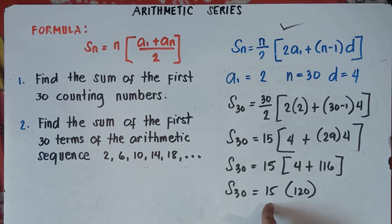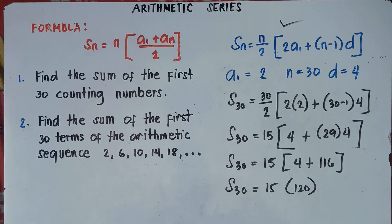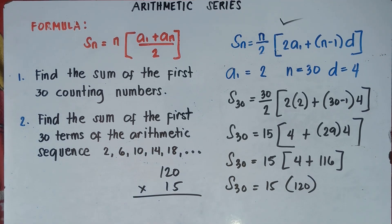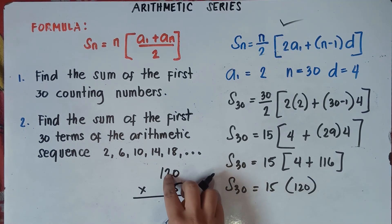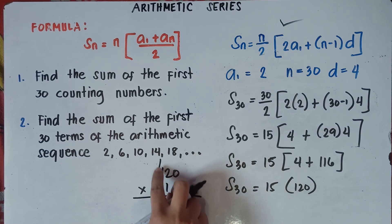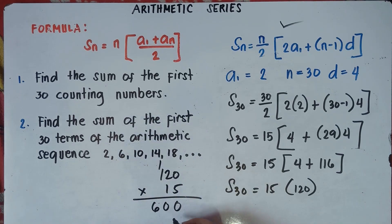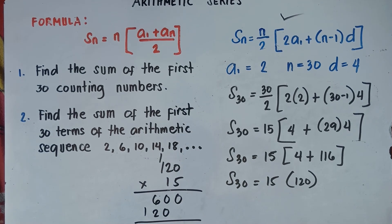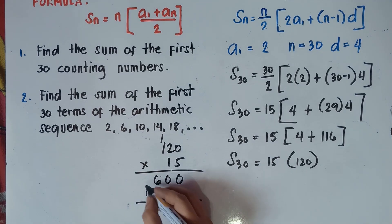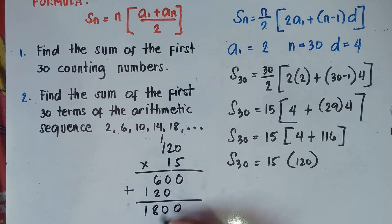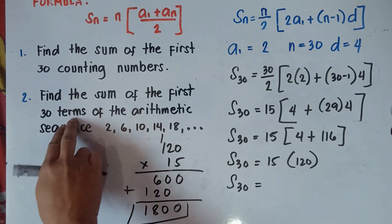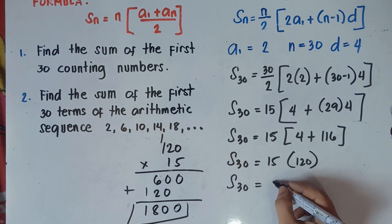Then we multiply 120 by 15. So 120 times 15: 5 times 0 is 0, 5 times 2 is 10 carry 1, 5 times 1 is 5 plus 1 is 6; 1 times 0 is 0, 1 times 2 is 2, 1 times 1 is 1. Adding: bring down 0, 0 plus 0 is 0, 6 plus 2 is 8, bring down 1. So 1,800. S of 30 — the sum of the 30 terms of this given sequence — is 1,800.